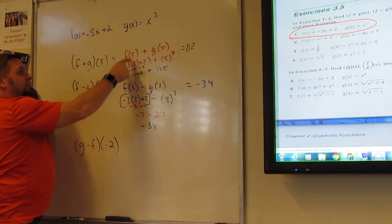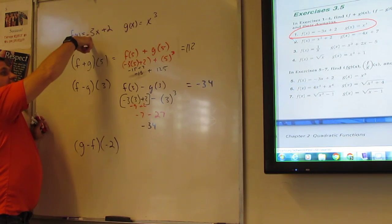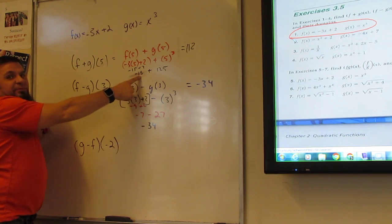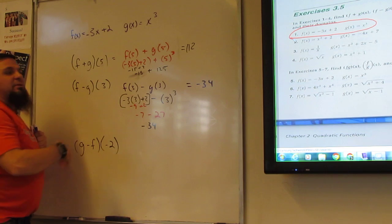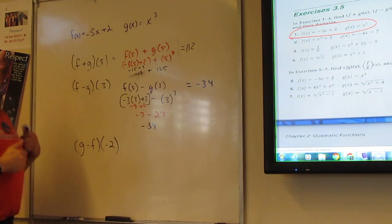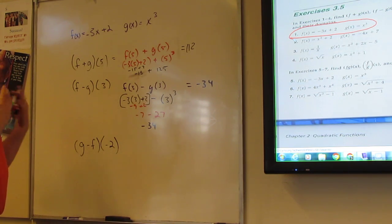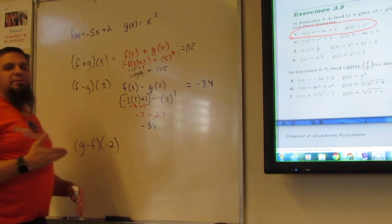So when we plug them in, we've got -3 times 5 plus 2, which is -13, and we've got 5 cubed, which is 125. Subtract it, get 112. We subtracted it because it's -13,